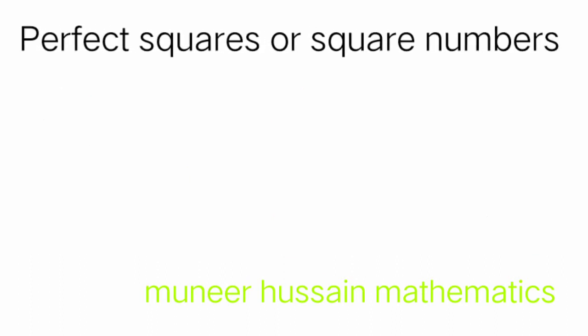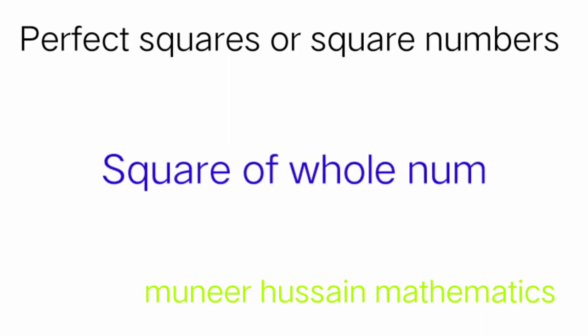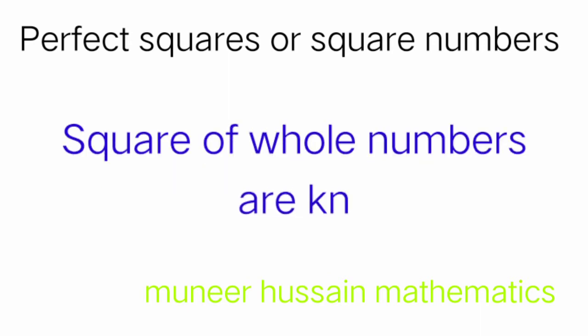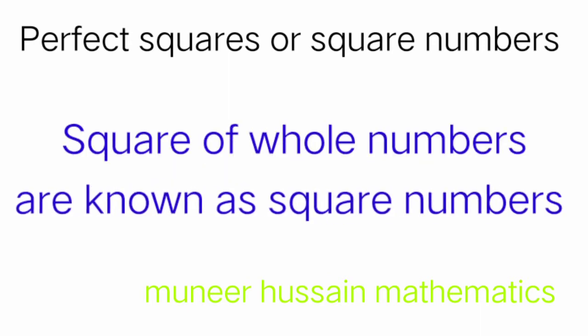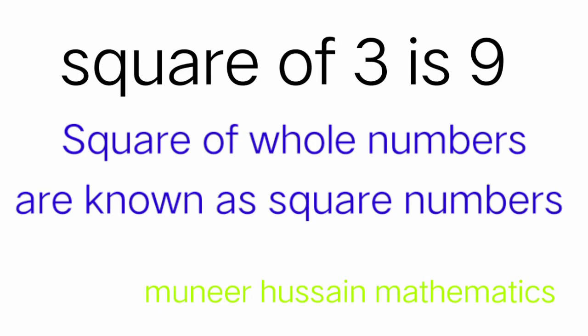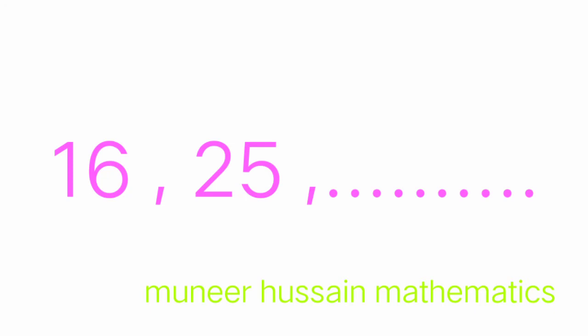After that, we shall know what are the perfect square numbers. Squares of whole numbers are known as perfect squares or square numbers. For example, 9 is a perfect square because it is the square of the whole number 3. Similarly, 16 and 25 are also called square numbers.